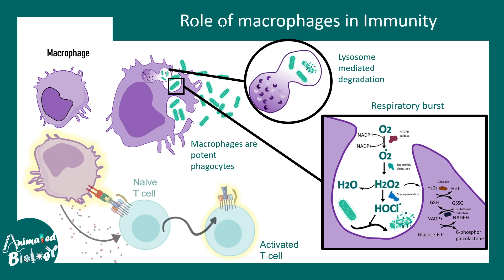Besides these functions, macrophages can present antigen onto class 2 MHC molecules to naive T-cells. They have the capability to activate the naive T-cell and polarize its differentiation to certain lineages. So macrophages have profound activity in terms of T-cell activation and overall immune modulation.